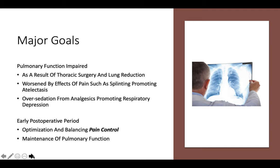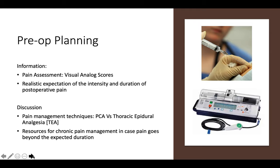We need to optimize and balance pain control while maintaining pulmonary function. Deep breathing after thoracotomy leads to pain — without good pain relief, patients won't take deep breaths, causing splinting, atelectasis, and respiratory complications. Pre-operative planning should address how pain will be assessed, realistic expectations about intensity and duration of postoperative pain, whether thoracic epidural or PCA is appropriate, and what resources are available to prevent chronic pain. Patients need to understand the procedure, realistic expectations for pain and rehabilitation, and that severe acute postoperative pain can progress to persistent post-surgical pain, but we have means to address it.